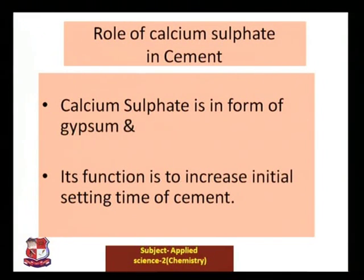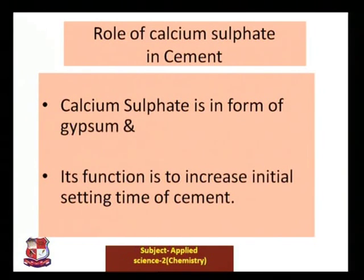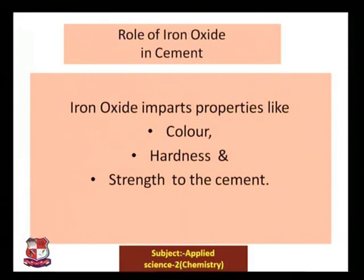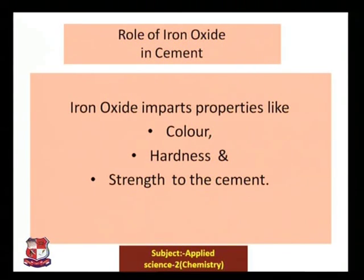Calcium sulfate is present in the form of gypsum, and its function is to increase the initial setting time of the cement, meaning the cement will take a little more time to set initially. Iron oxide is responsible for imparting properties like color, hardness, and strength to the cement.